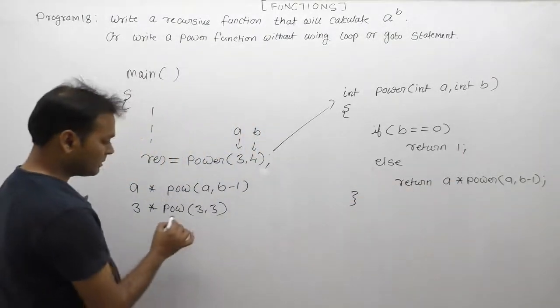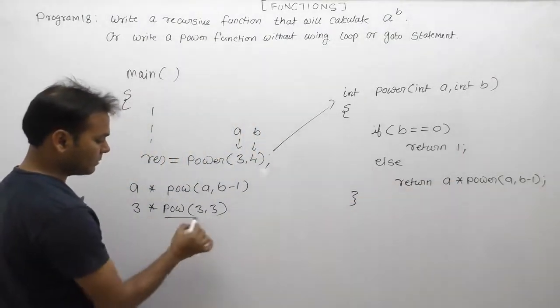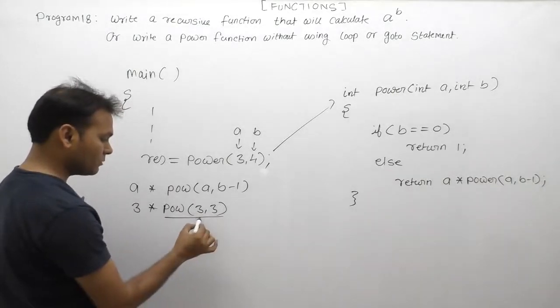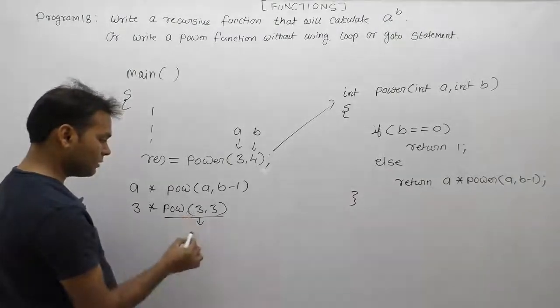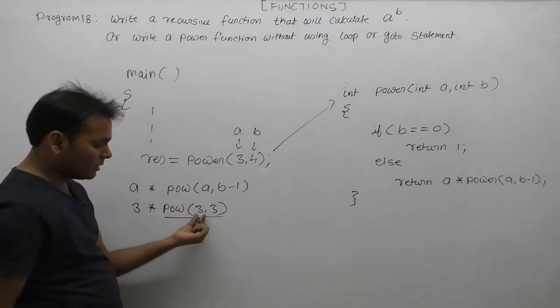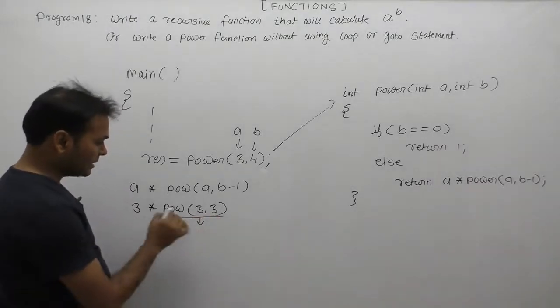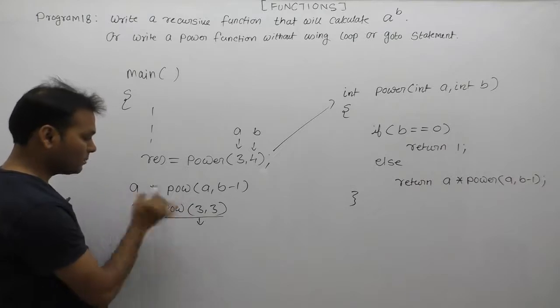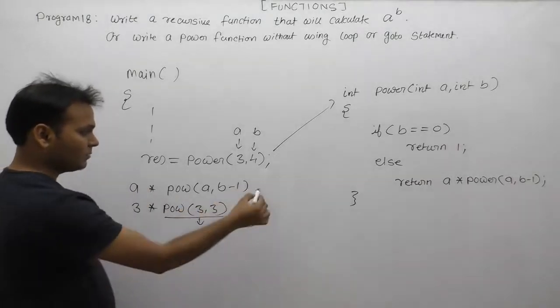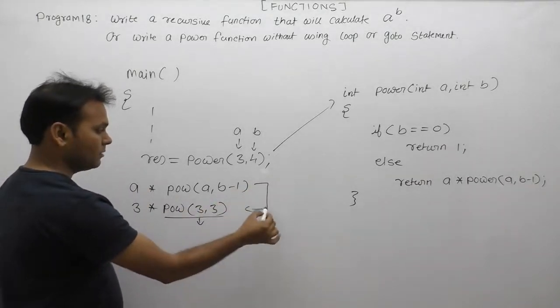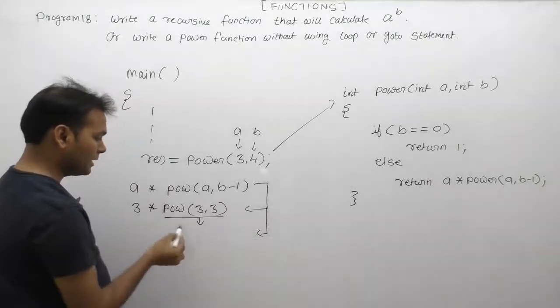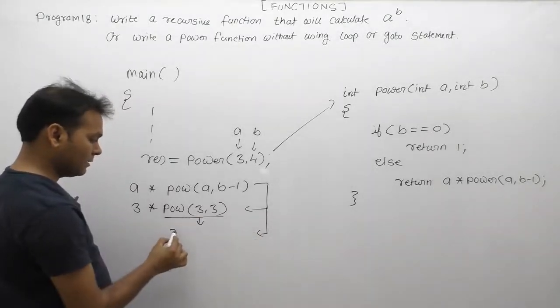Next time we call power(3, 3). Again we write the same case: second time, a's value is 3 and b's value is 3. The same expression repeats. Again, a is 3 multiply by power(3, b-1).